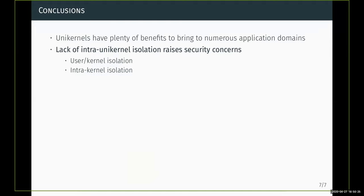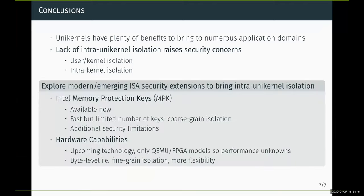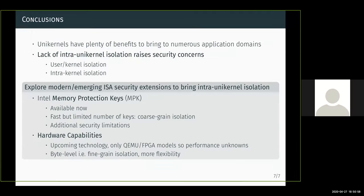To summarize, the unikernel model could evolve to bring isolation within a unikernel instance while keeping the nice unikernel benefits such as lightness and fast system calls. To do so, we propose two emerging ISA extensions: Intel MPK and hardware capabilities. Thank you very much for your attention and I'm ready to take any questions.